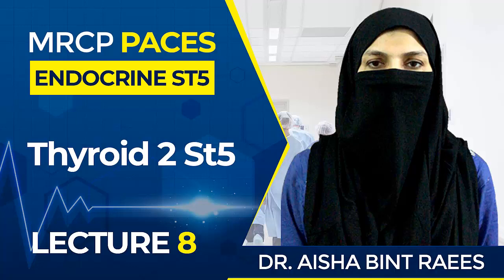There are four features of Graves disease: eye disease — patients can have many eye manifestations — diffuse goiter, thyroid acropathy, and pretibial myxedema.